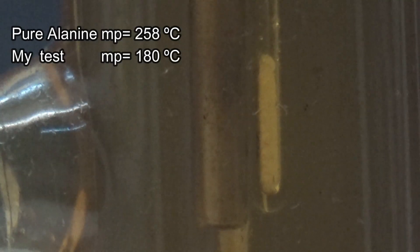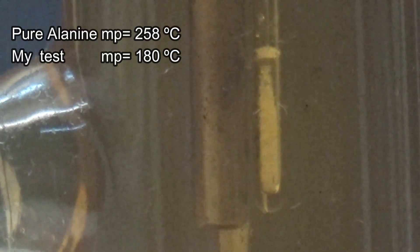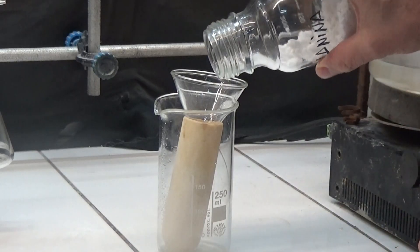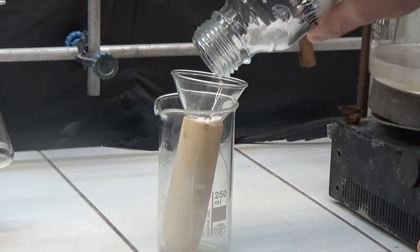The melting point of pure alanine is 258 degrees. In my test it gave a very low result, 180 degrees. This indicates that the alanine obtained is quite impure and must be purified.